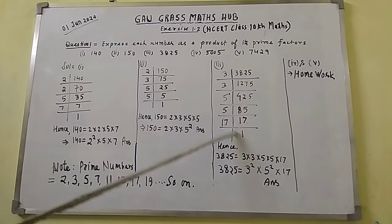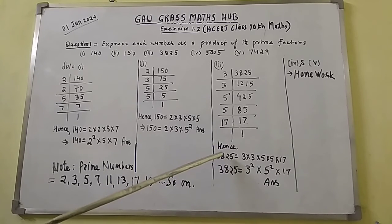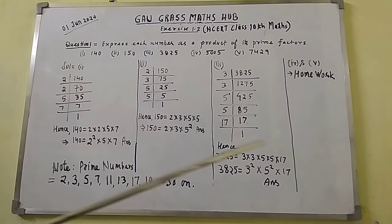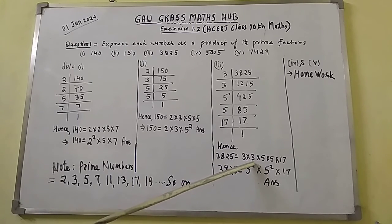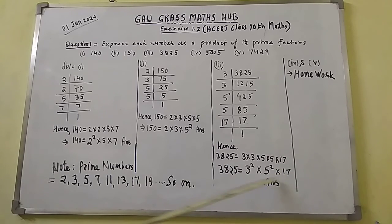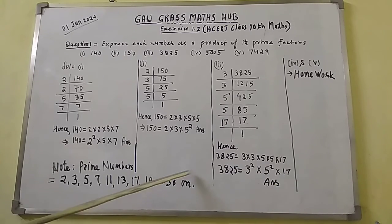Hence, the prime factors of 3825 are 3 × 3 × 5 × 5 × 17. This means 3825 = 3² × 5² × 17. Since 3 appears twice and 5 appears twice, you write 3² and 5², and 17 is left alone. Here, 3, 5, and 17 are all prime numbers, so this is the correct answer.